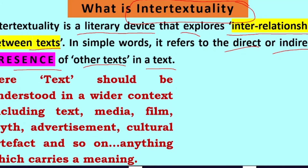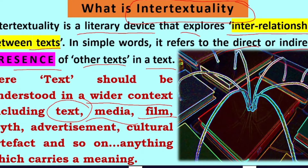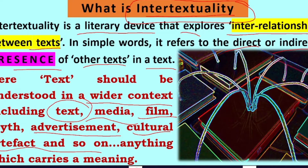By 'text' we do not mean just words written on a page — it should be taken in a wider context. It includes all types of media: a film is also a text, myths are also texts, advertisements, cultural artifacts and so on — all these are texts. Anything which has a meaning and can be interpreted is a text. Intertextuality is when a particular work has echoes, references, allusions, borrowings, and influences from other texts, and when we read that text we are reading all those older texts as well.